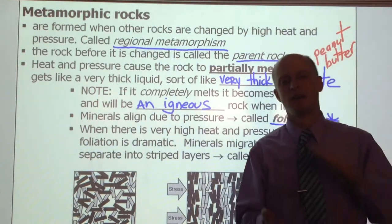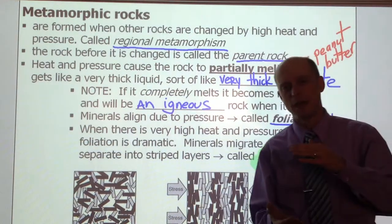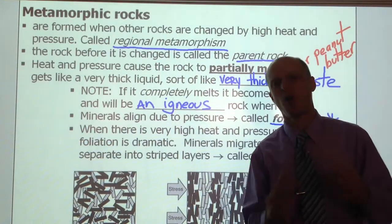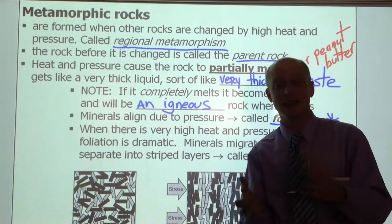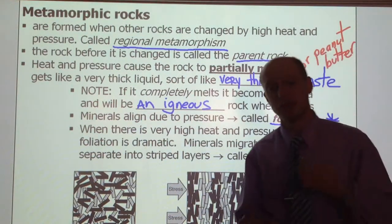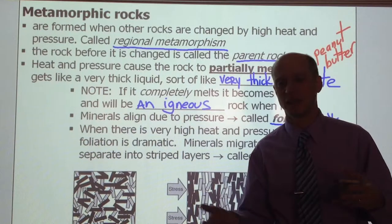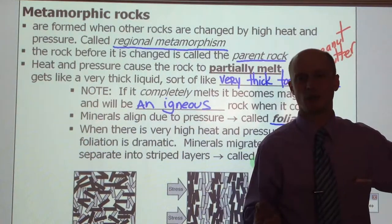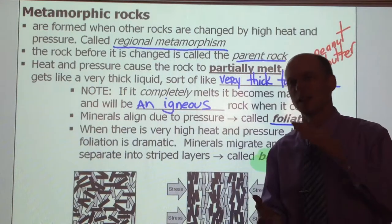That pressure is going to create a tremendous amount of heat. So now you have this rock that is really hot, and the key thing is that it partially melts. Rocks can get so hot that if they're buried really deep, they can completely melt and become magma again — and that leads to an igneous rock once it's totally melted.